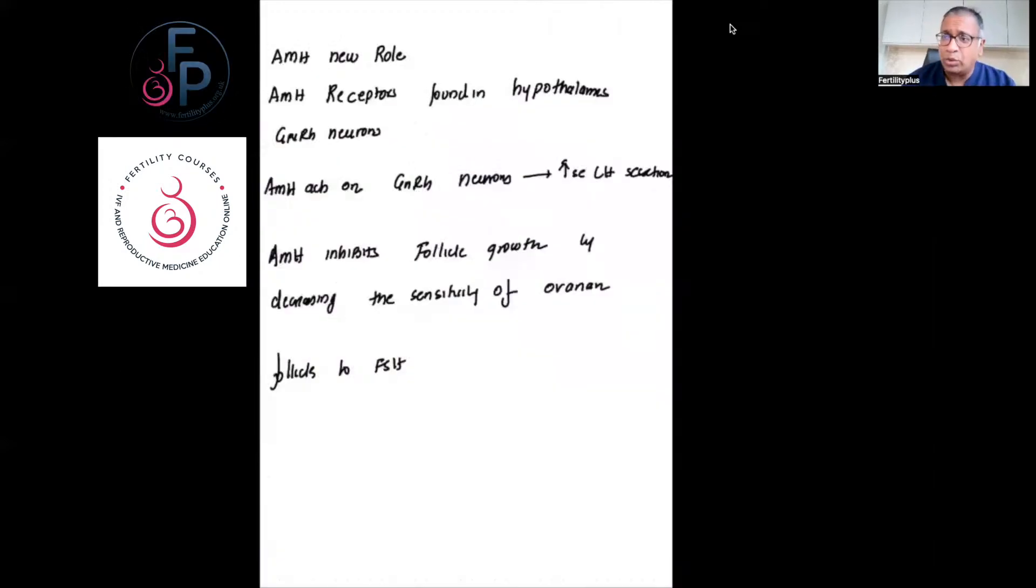The AMH also has a new role here. We have found AMH receptors in the hypothalamus in GnRH neurons, and AMH acts on the GnRH neurons to increase LH secretion. The AMH also inhibits follicular growth by decreasing the sensitivity of ovarian follicles to FSH. That's one of the reasons that AMH holds back follicles—it has an inhibitory response so that you only lose a certain number of follicles.